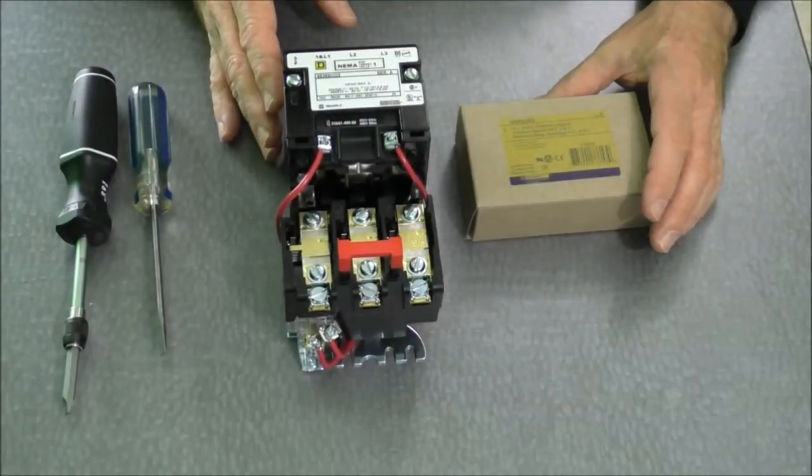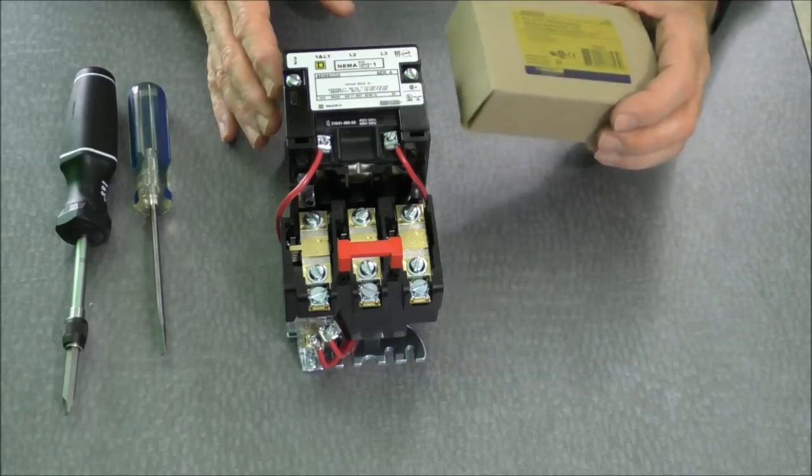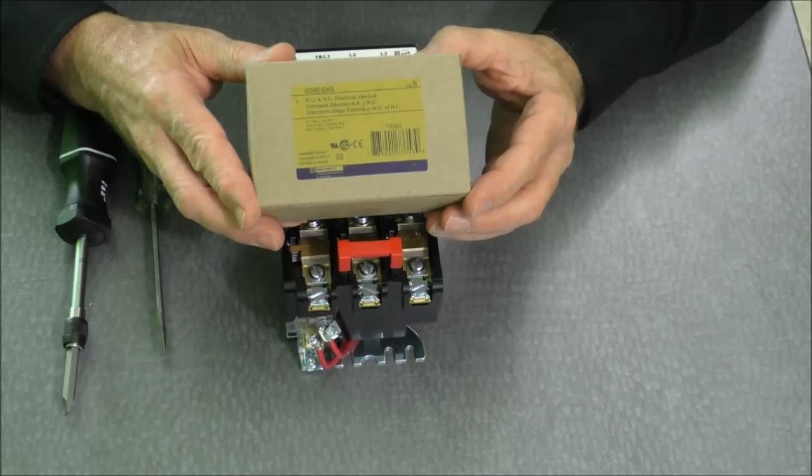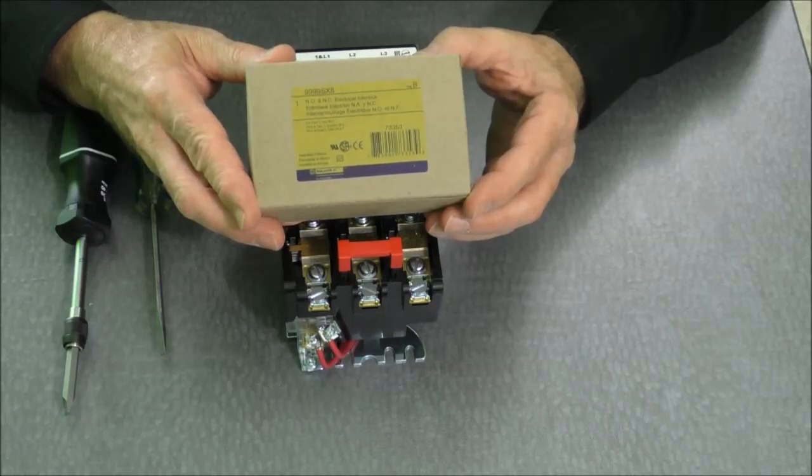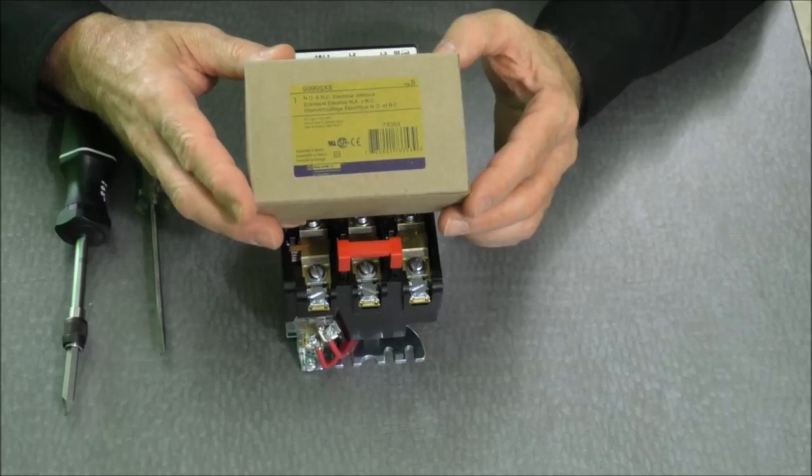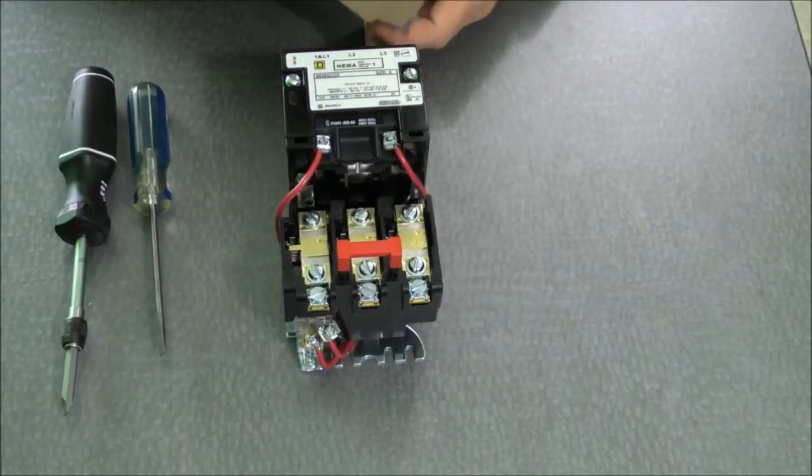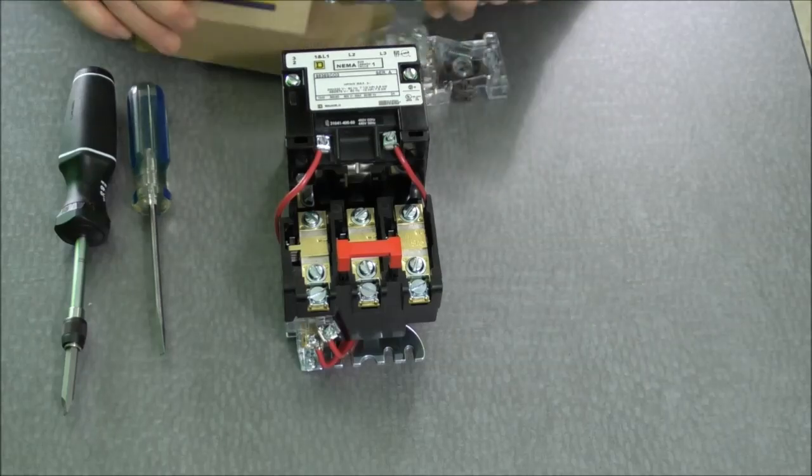Okay, so let's begin by putting in our field installable auxiliary contact blocks. Here I have a kit, catalog number 9999SX8. It has one normally open and one normally closed auxiliary contact. They will be affixed to the side of the starter.